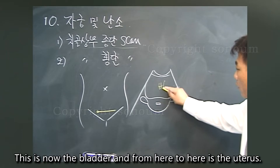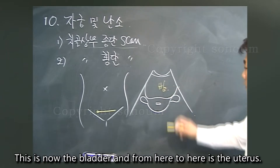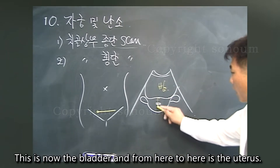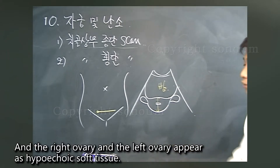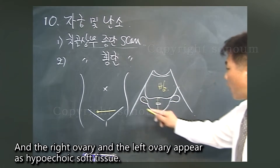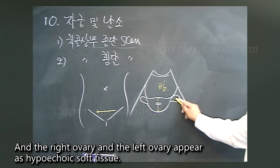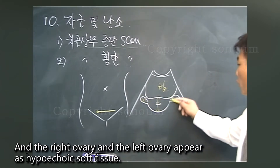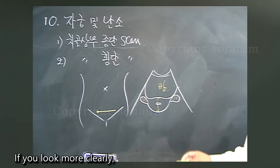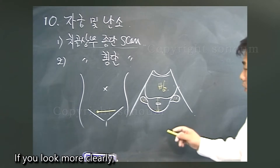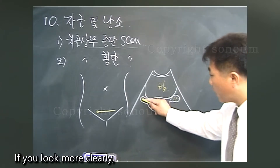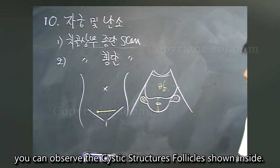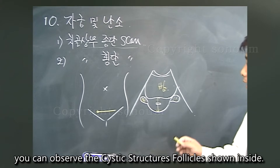This is the bladder, and from here to here is the uterus. The right ovary and the left ovary appear as hypoechoic soft tissue. If you look more clearly, you can observe the cystic structure's follicles shown inside.